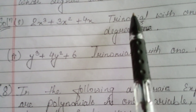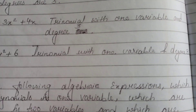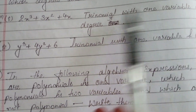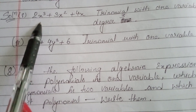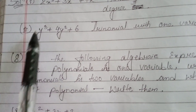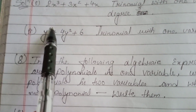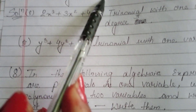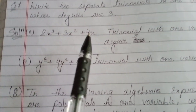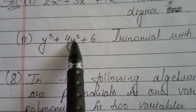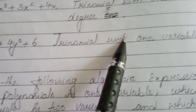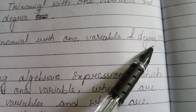This trinomial uses only x, so it is a trinomial with one variable and degree 3. For the second example, y can be used: y cubed plus 4y squared plus 6. The highest power must be 3 because the degree is 3. This is also a trinomial with one variable and degree 3.